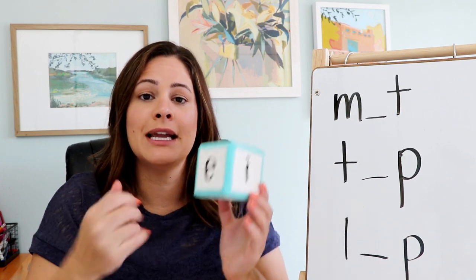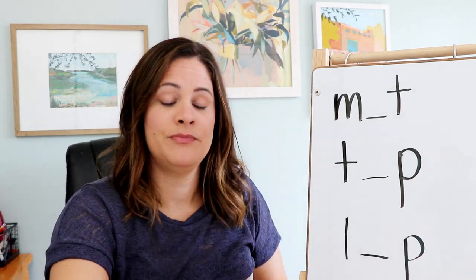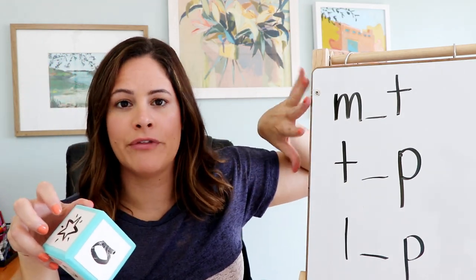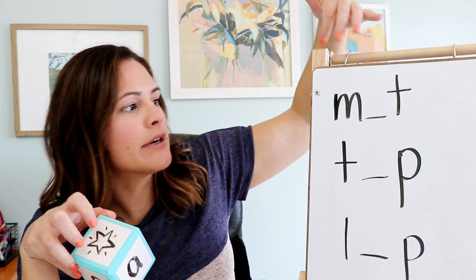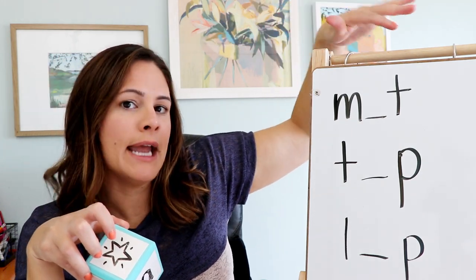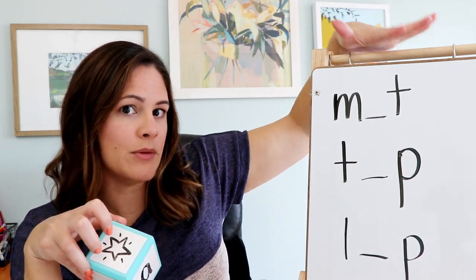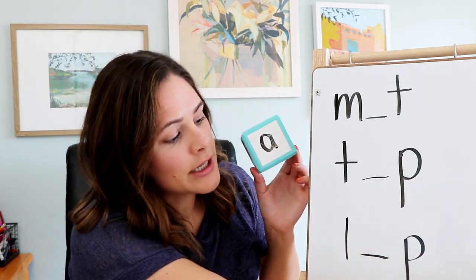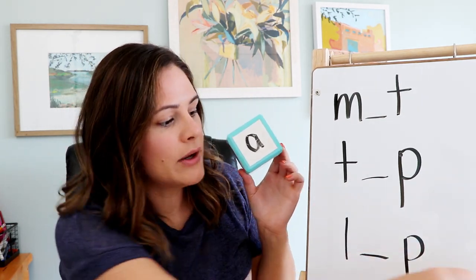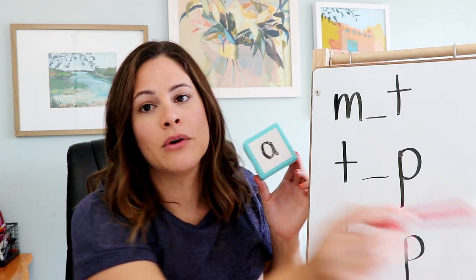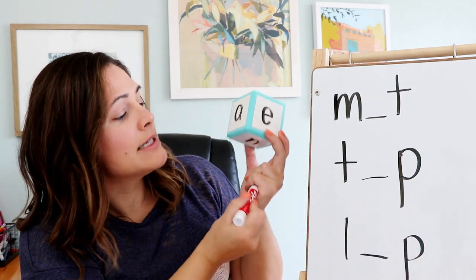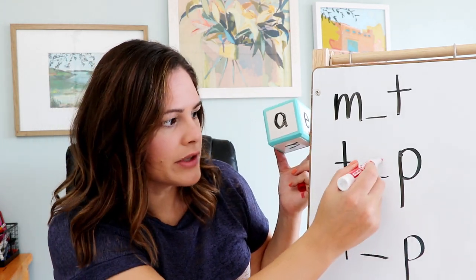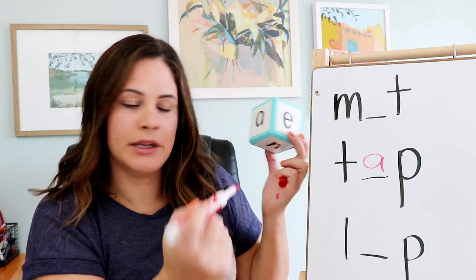Students simply take turns rolling their dice. If they land on A, they would choose any of the words on the board — here I only have three just so you can see them, but realistically I would put about ten different words on here. The student would take a look and could either use a little magnet tile to place the vowel in, or they can come write the word. For example, A would actually fit in all of them, but let's say I wanted T-A-P. Tap — that's a word, so I would put it there.